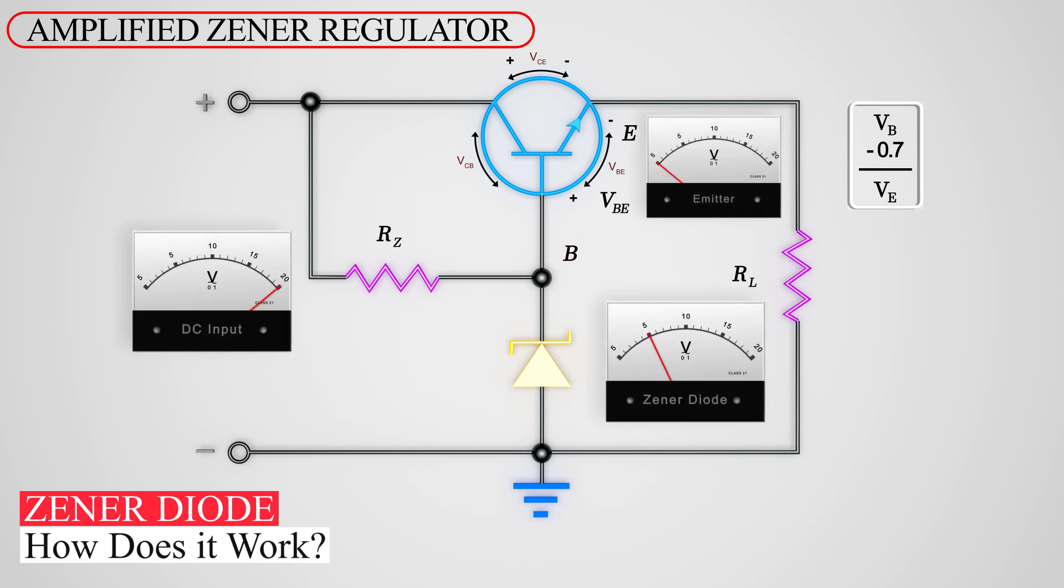Thus, if we change the Zener diode value to 10, then the voltage at the transistor base is 10 volts. After passing through the transistor, the voltage drops to 9.3 volts, resulting in a 9.3 volt load at the RL resistor.